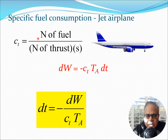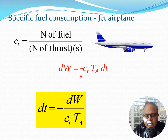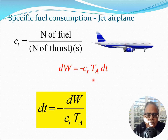The change in weight dW is equal to CT times the thrust TA times dt. The negative sign simply means that the weight of the aircraft reduces as time elapses — when you start the flight your total weight is very high, and as fuel is expended the weight keeps decreasing. From the equation for dW we obtain dt equals negative dW divided by CT·TA, which will let us calculate the range of the jet airplane.